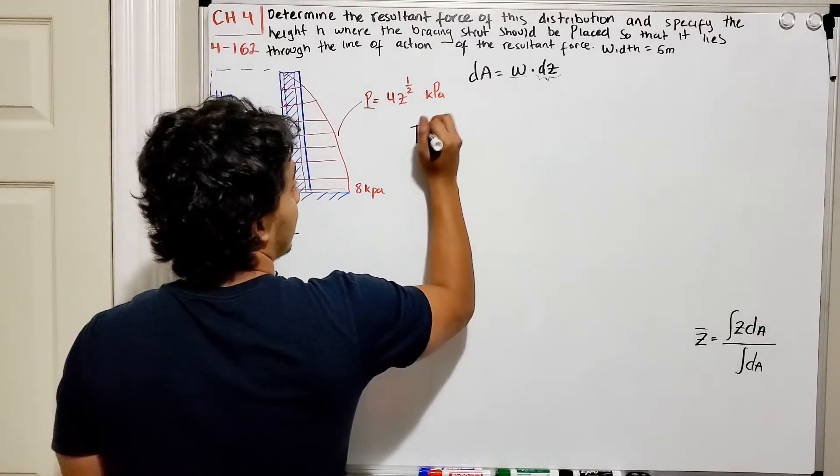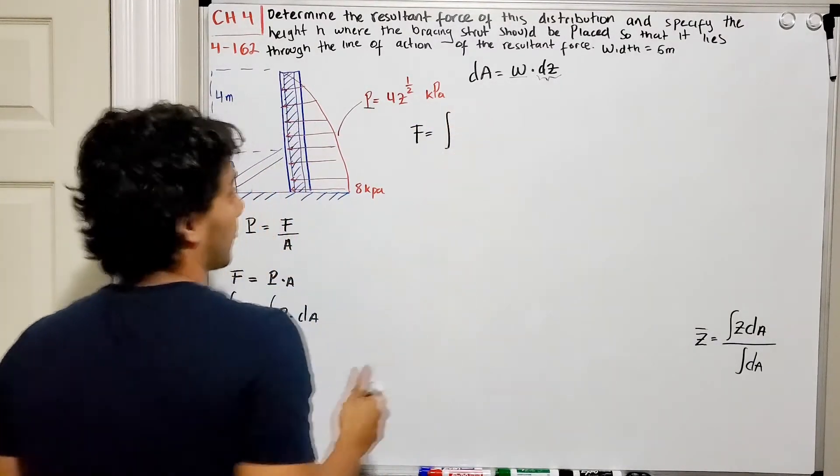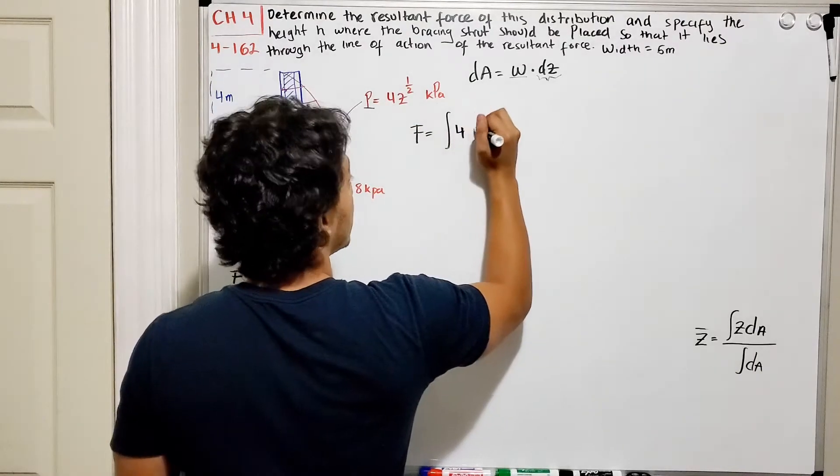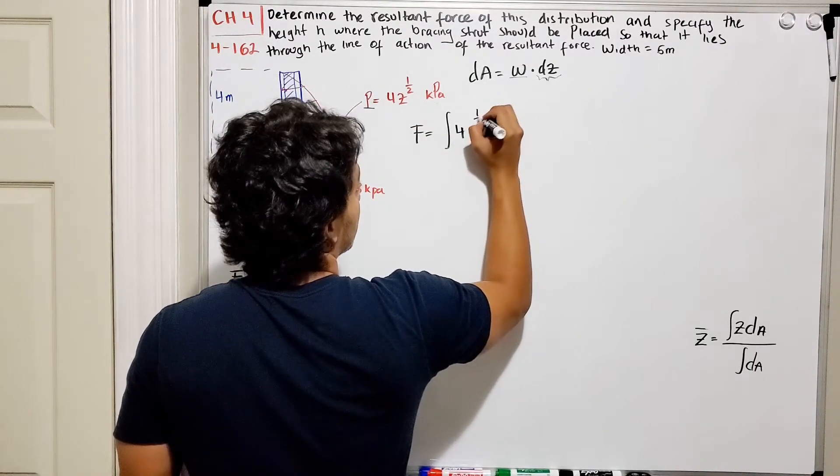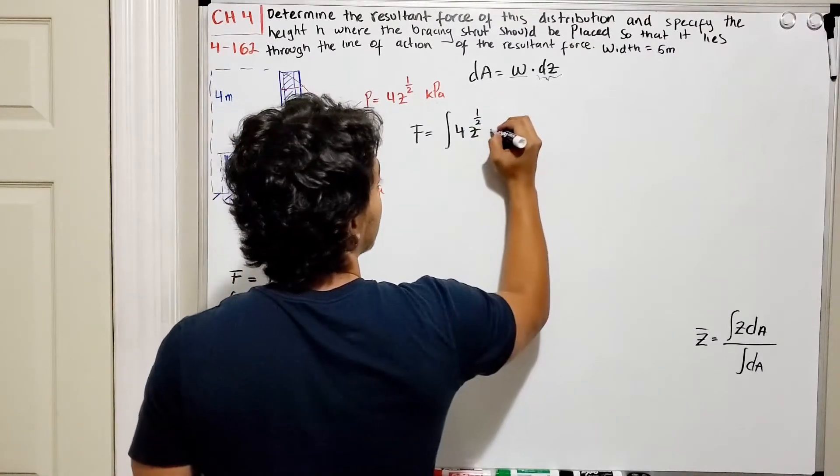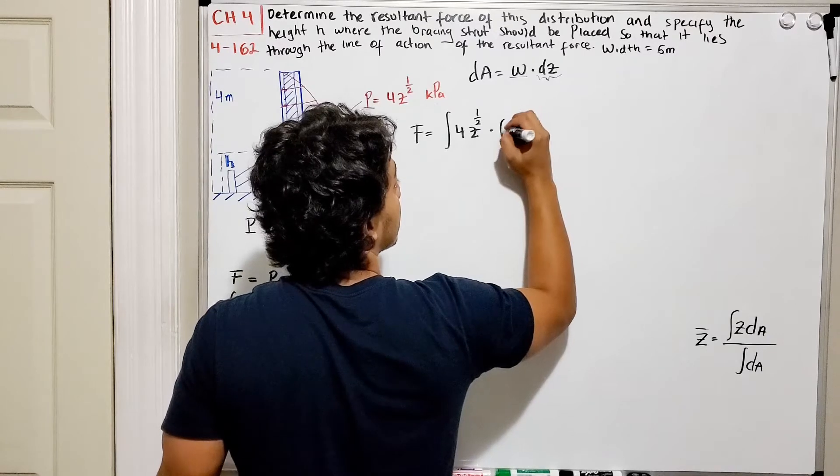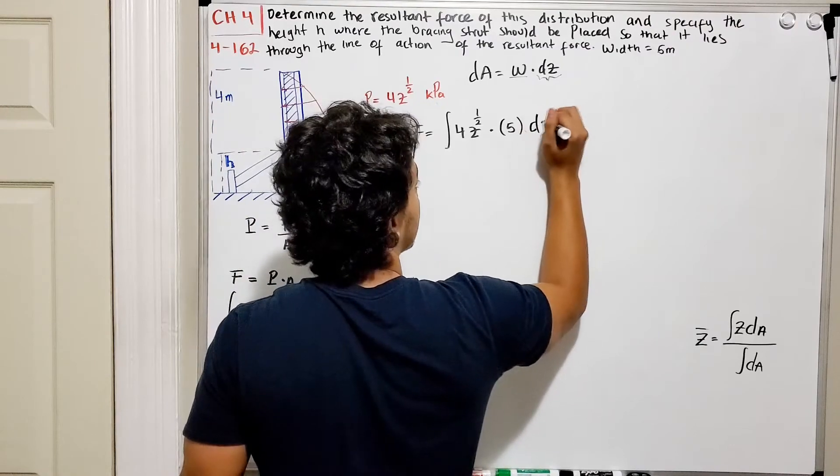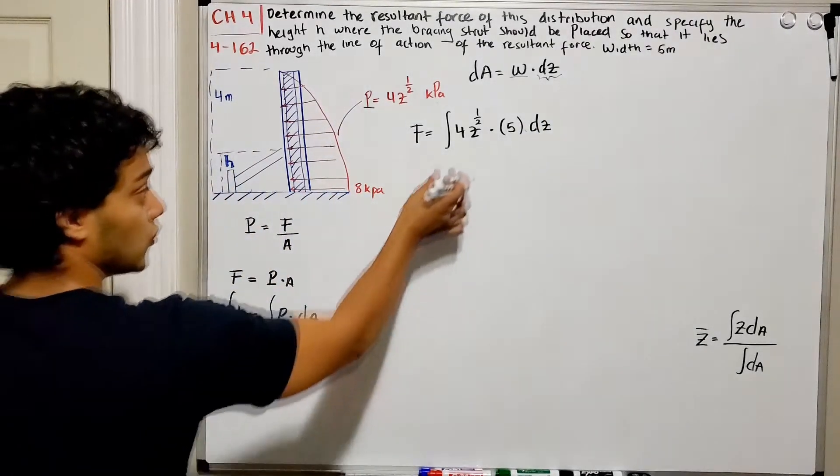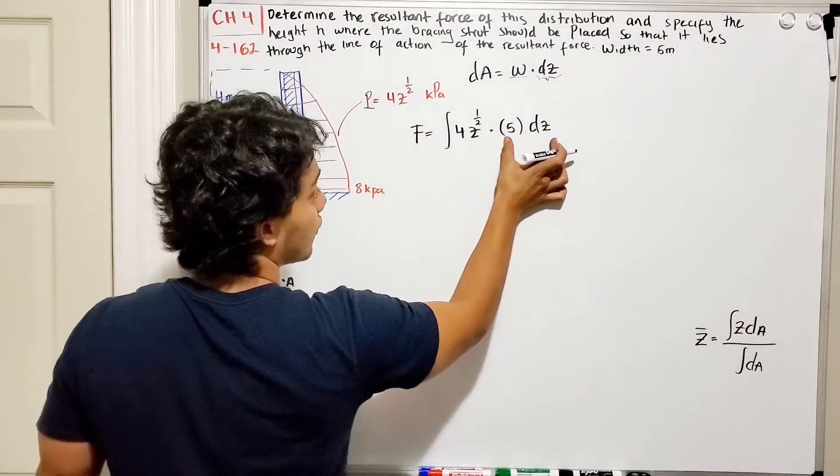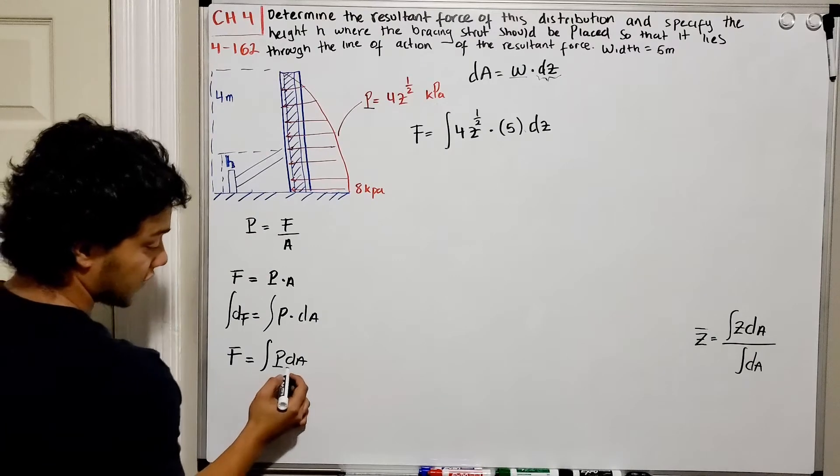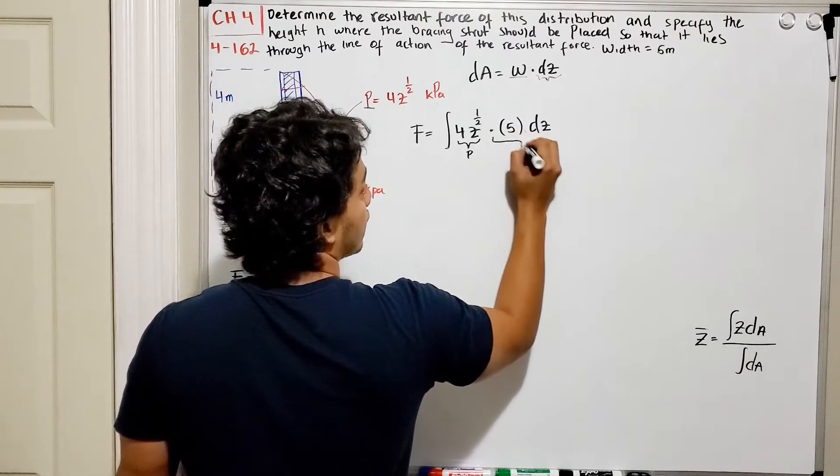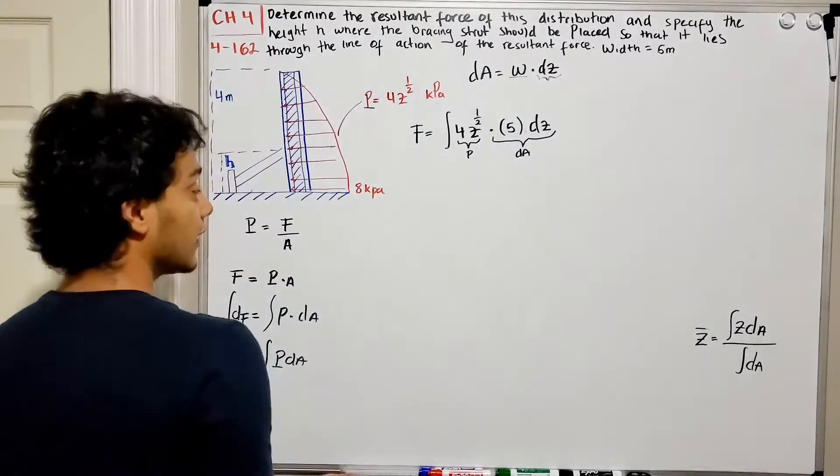Let's plug it in here. F is going to be equal to the integral. Let's replace our pressure that it was given, which is 4 multiplied by Z to the 1 half power multiplied by W. W is 5 meters, multiplied by dZ. I can just leave it outside, dZ. Why did I do this? Because it's my pressure, and this whole thing is my area. Pressure times the change in area, so I have that this guy is pressure, while all this is my change in area.